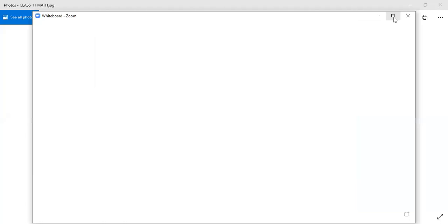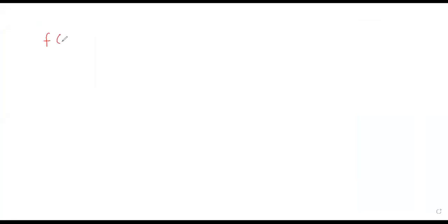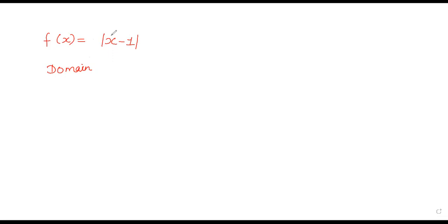Question No.5: find the domain and range of the real function f defined by f(x) = |x - 1|. For the domain, what is the value of x? The function is defined for negative, zero, and positive values of x.